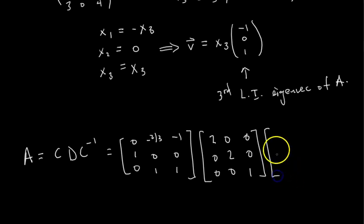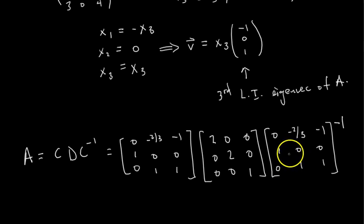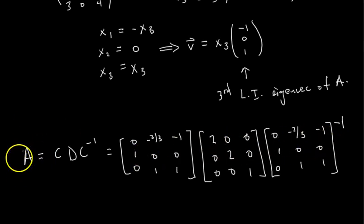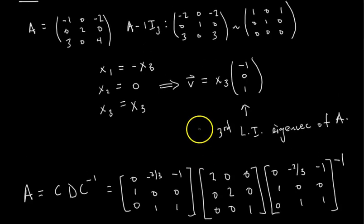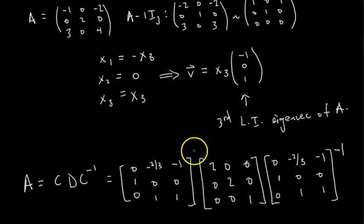The third matrix is just C-inverse. You can actually calculate C-inverse or you don't have to — it depends on what the directions say. Usually on a test they don't make you compute it, but if you have extra time you could compute the inverse matrix, multiply the three together, and verify you get back matrix A. Hopefully this process makes sense, and I'll see you in the next video where we drill more diagonalization problems.